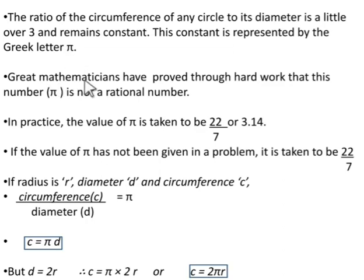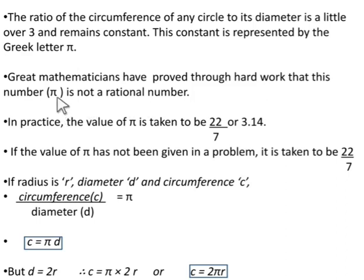Great mathematicians have proved through hard work that this number pi is not a rational number. We have already seen that rational numbers are those whose decimal form is either terminating or non-terminating recurring. So if pi is not a rational number, its decimal form must be non-terminating and non-recurring. Therefore, pi is called an irrational number.